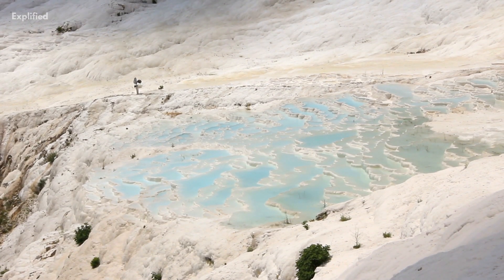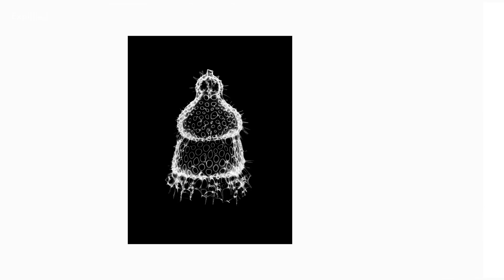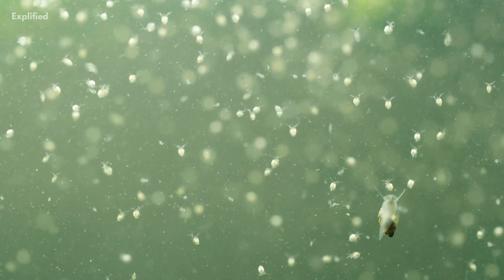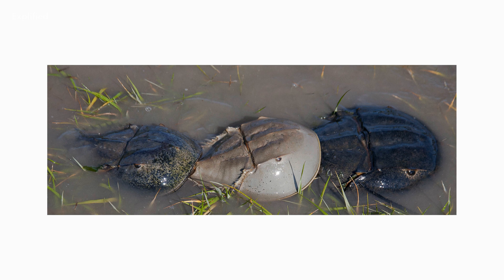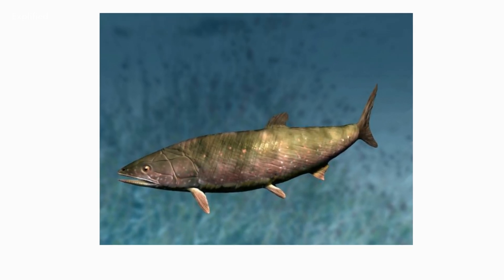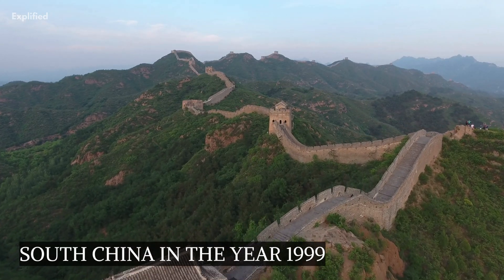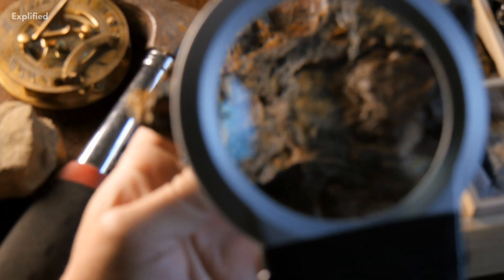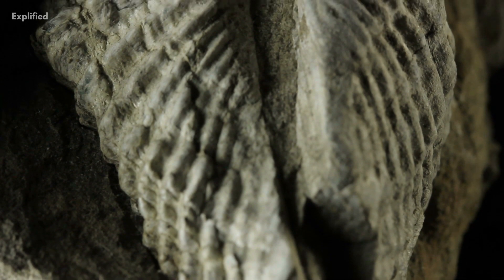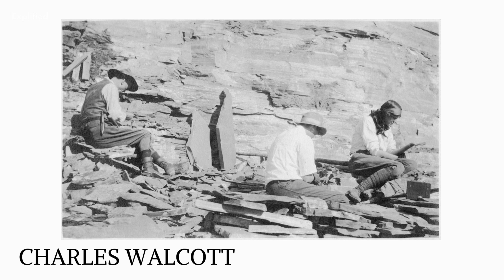Ordovician rocks also include siliceous radiolarians, which are spherically symmetrical creatures with fine, sculptured skeletons that live as zooplankton — groups of tiny animals that fed on phytoplankton. The oldest commonly recognized vertebrates were known from the Ordovician until the discovery of early Cambrian vertebrates in South China in 1999. The earliest specimens were two genera of prehistoric fishes discovered in the upper Ordovician Harding Sandstone of Colorado by American geologist Charles Walcott in the late 1800s.